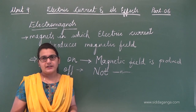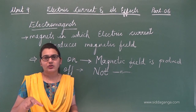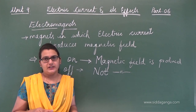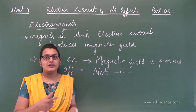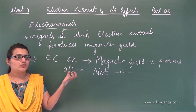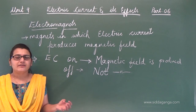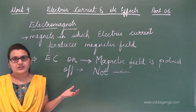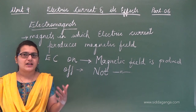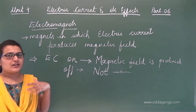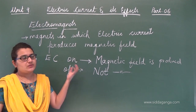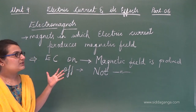The advantage of electromagnets over permanent magnets is that we can control the magnetic field. With a permanent magnet, we cannot control the magnetic field — it always surrounds the magnet. But with an electromagnet, whenever we want we can use the magnetic field, and whenever we don't want it we simply switch off the current. So we can use this magnetic field with our convenience by switching the current on and off.